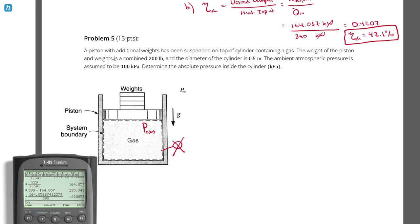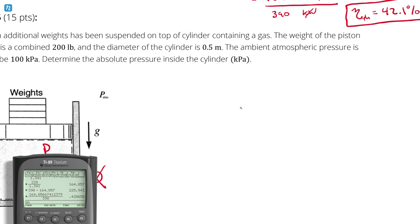We know that the combined weight is 200 pounds pushing down on the piston, the diameter of the piston is 0.5 meters, and the ambient atmospheric pressure is assumed to be 100 kilopascals.